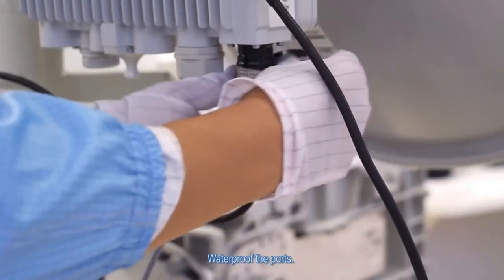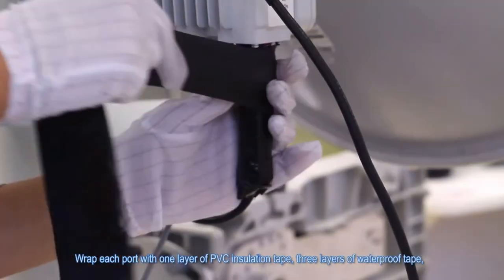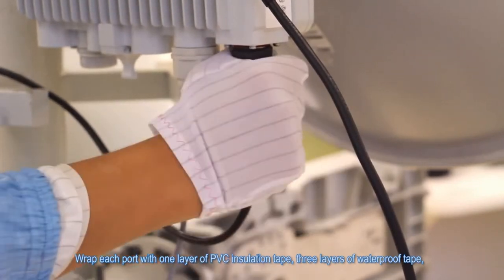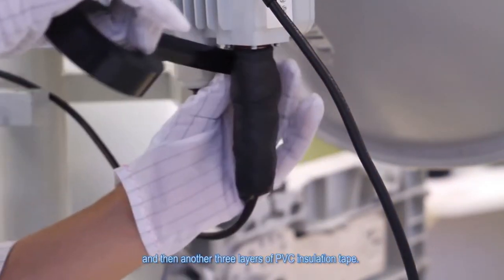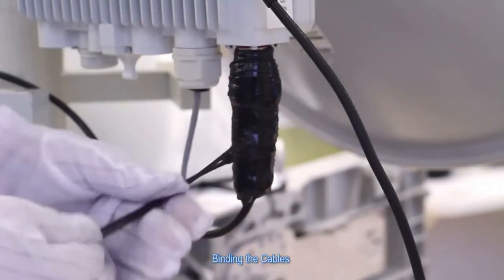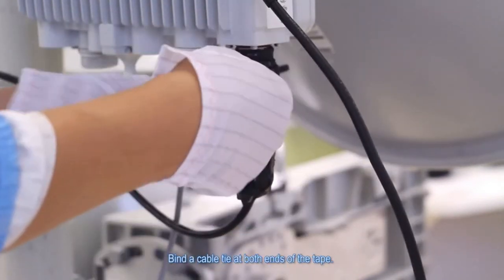Laying out the cables. Waterproof the ports. Wrap each port with one layer of PVC insulation tape, three layers of waterproof tape, and then another three layers of PVC insulation tape. Winding the cables. Wind a cable tie at both ends of the tape.